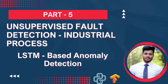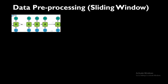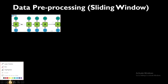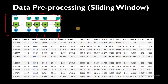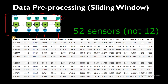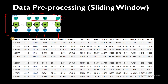Let's start. This is the basic structure of a recurrent neural network. This is our dataset that we are concerned with, which is basically the Tennessee Eastman process dataset, where we have 12 sensor data. These are the names of the sensor data.